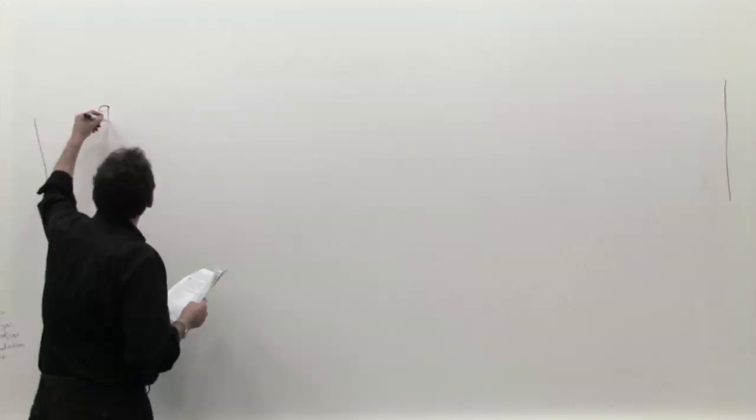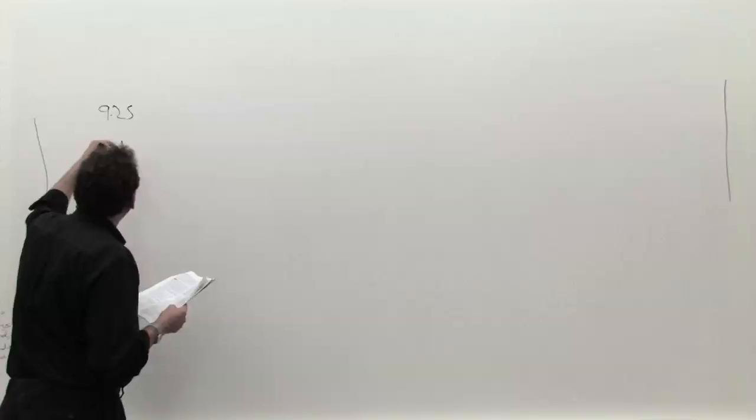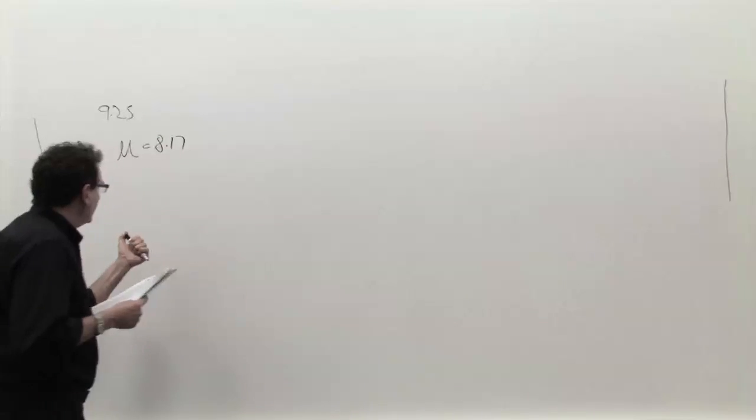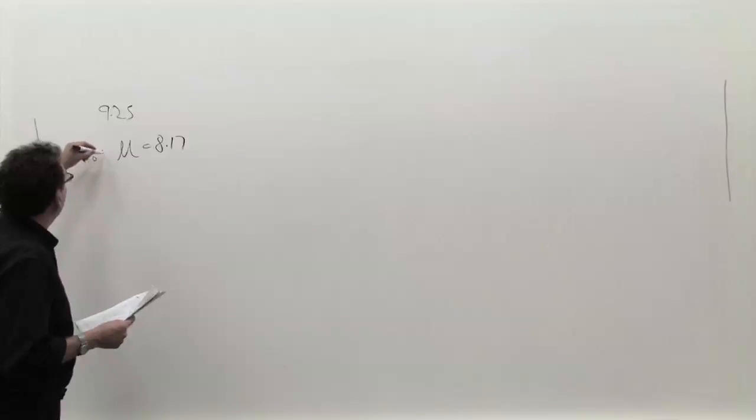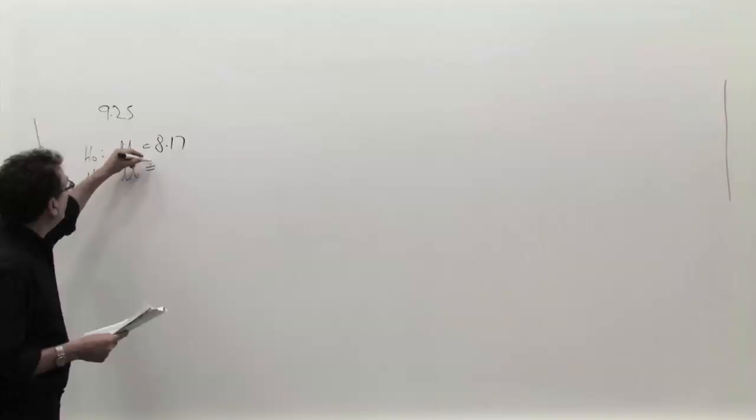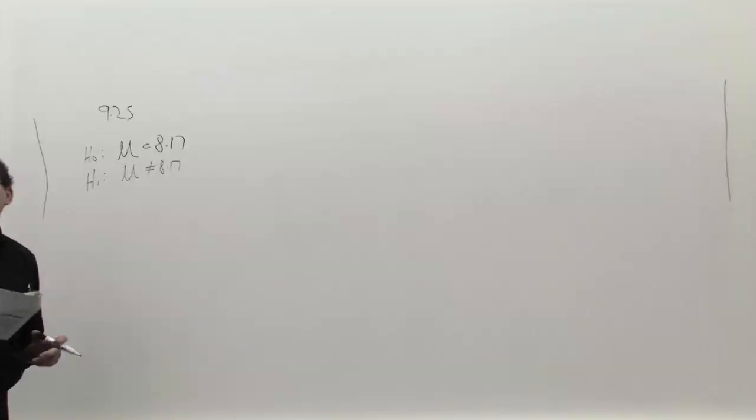Homework 9.25, which says a manufacturer claims that the machine is set at 8.17 ounces. And the question is, is that really true? The null hypothesis would give the benefit of the doubt to the status quo versus the alternative possibility that the average is not 8.17. I don't care if it's higher, I don't care if it's lower. Is the machine doing what it's supposed to be doing at 8.17?